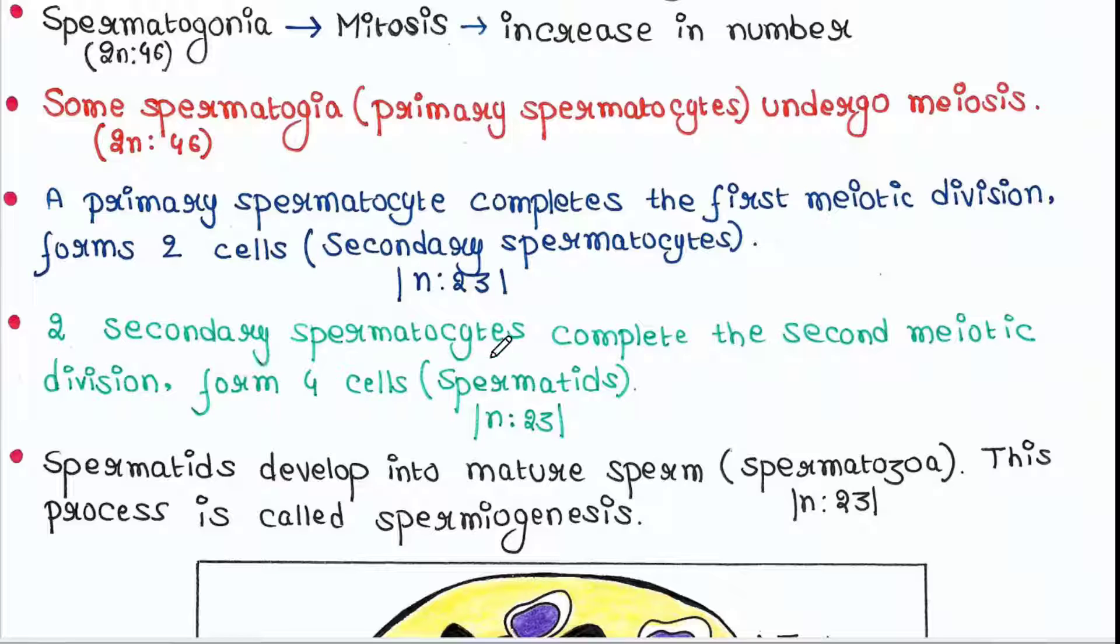These two secondary spermatocytes complete the second meiotic division and form four cells. These cells are haploid, they contain 23 chromosomes each and are now called spermatids.